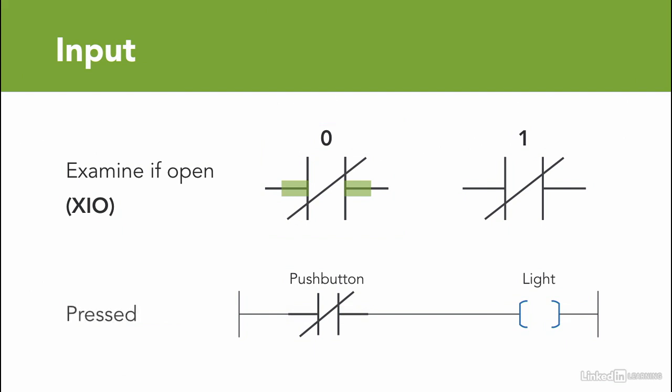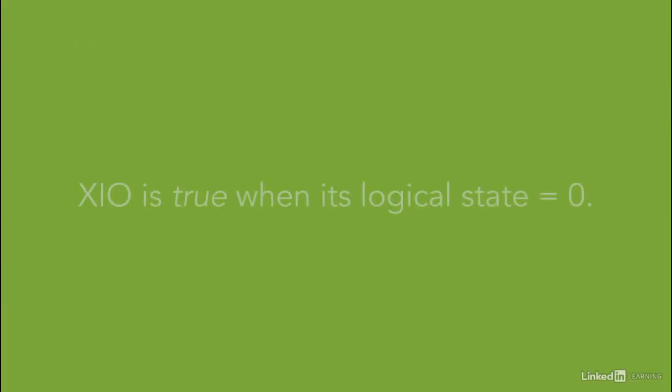When the push button is pressed, meaning the logic state is 1, true, this means the XIO instruction is false, it's not highlighted, and the light will not turn on. XIO is true when its logic state equals to 0. This means that the tag assigned to the XIO instruction is active. Instructions again read a memory location, and according to the value there, it will be highlighted.